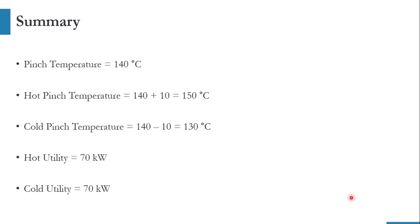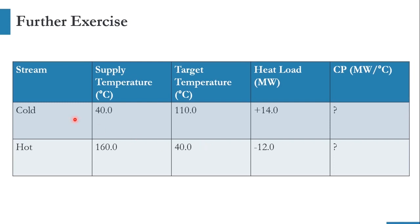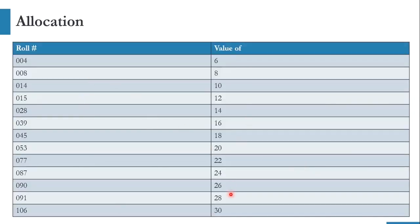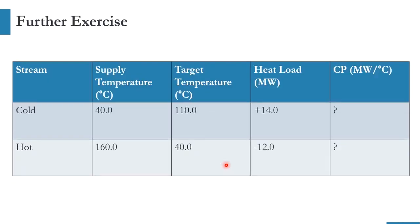Now, after this extensive exercise, the assigned problem is: a cold stream at 40°C with outlet temperature 110°C and heat load of 14 MW. Calculate the CP. The hot stream is given, and roll numbers are assigned different values of delta T minimum: 6, 8, 10, 12, 14, 16, 18. You must submit by the deadline for attendance to be counted for this lecture. Thank you so much.